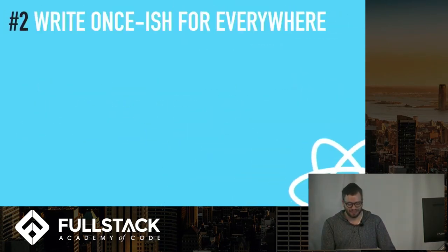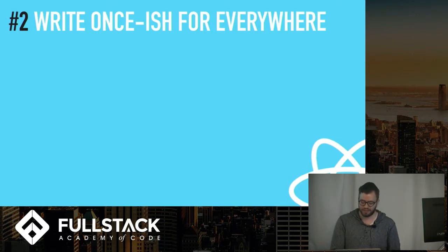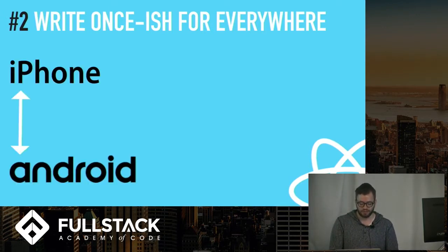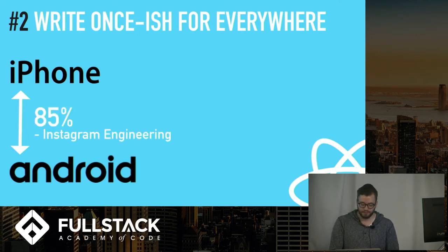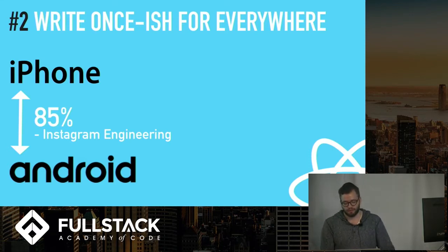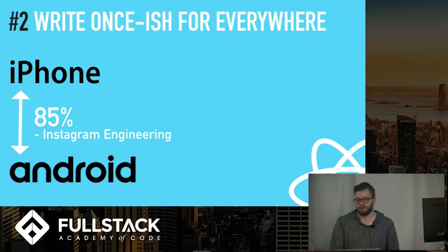Reason two: write code that compiles to native code for either iPhone or Android. What is the expected amount of shared code between iPhone and Android? In the words of the Instagram engineering team, 85% of the code is shared between iPhone and Android. They actually have some components in the Instagram app that are 99% shared — that's pretty amazing.